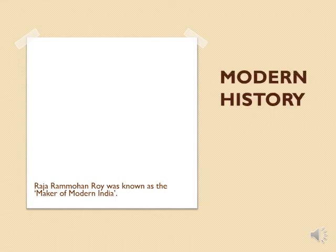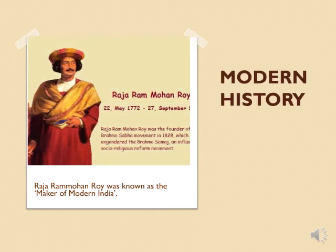The modern period in India begins with the age of industrialization in the early 19th century under British rule. The founder of modern India, Rajaram Mohan Roy, was known as the maker of modern India. He was the main force behind the introduction of Western education and the English language in India. It is compiled with five major events: decline of the Mughal Empire, rise of regional states and European power, 18th century revolts and reforms, and the Indian national movement.